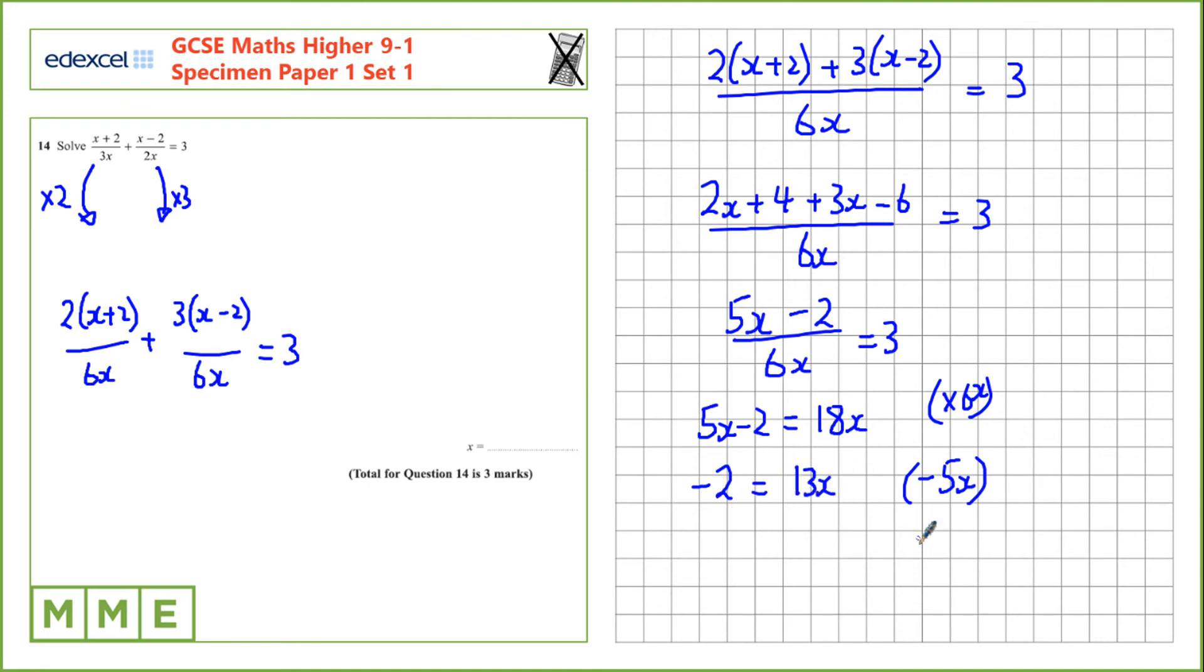Our last step, let's divide by 13. So, on the right hand side, we have x, on the left hand side, negative 2 over 13.